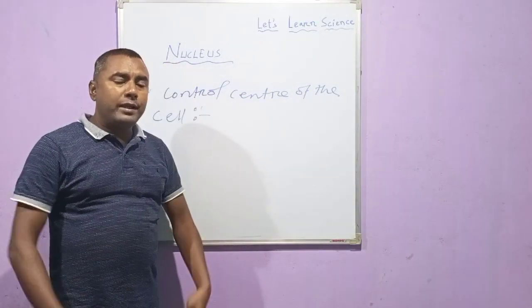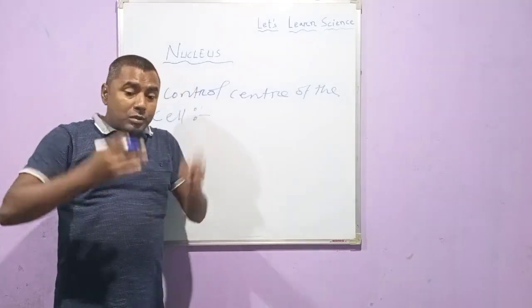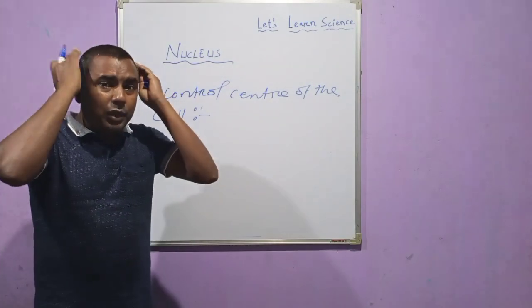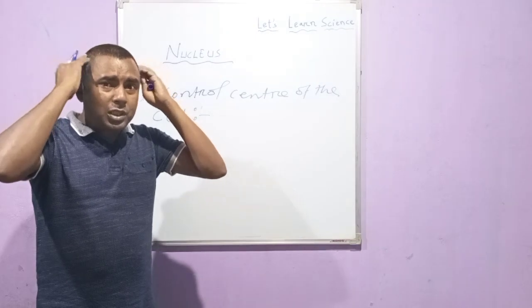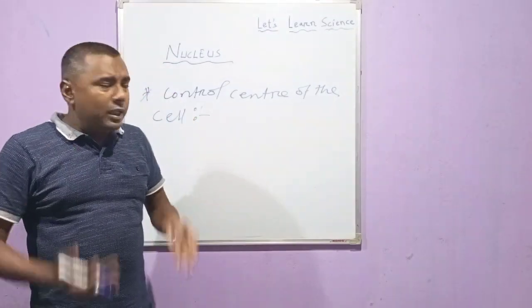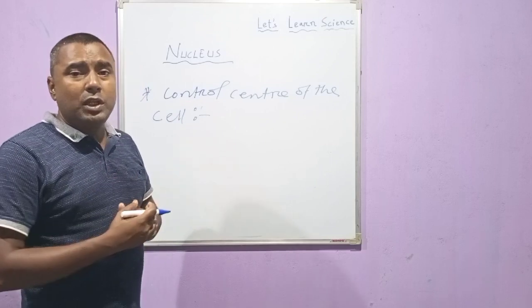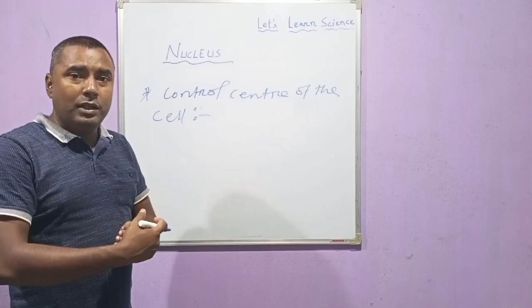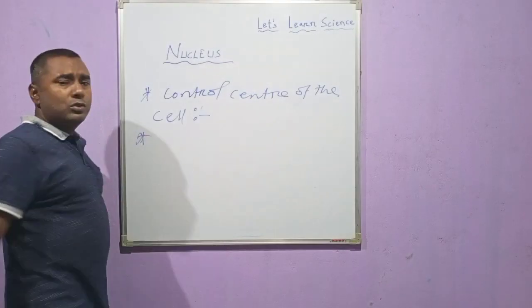The nucleus is similar to our brain, because we carry out each and every function with direction from the brain. Our brain is the master organ of our body. In the same way, the nucleus is the control center of the cell because it gives direction for each and every activity of the cell. Beside that, it also performs some other functions.